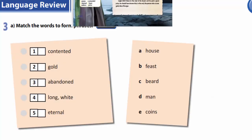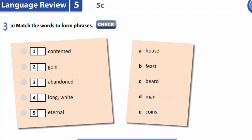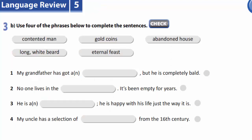In task 3, we are to remember the story The Worth of Wealth. In the first part of the task, you are to match the words to make phrases. You are to finish these phrases, and then you will use them to complete the sentences. As in the following: my grandfather has got a long white beard, but he is completely bald.